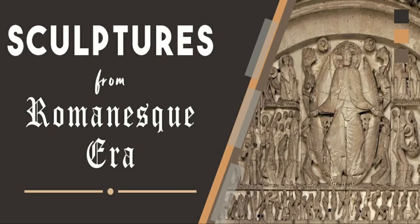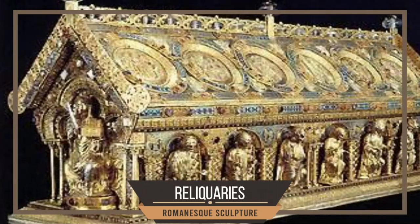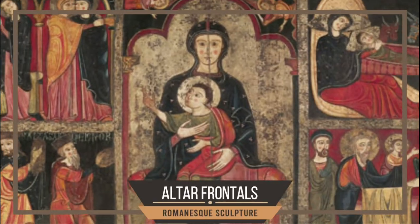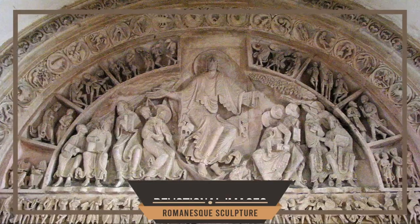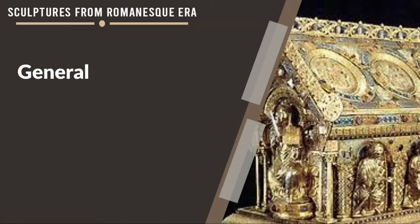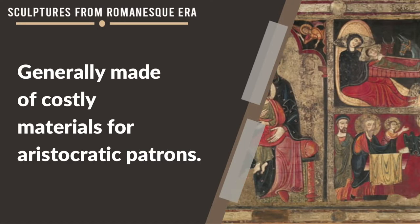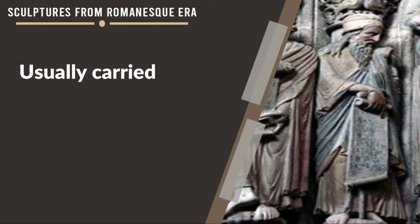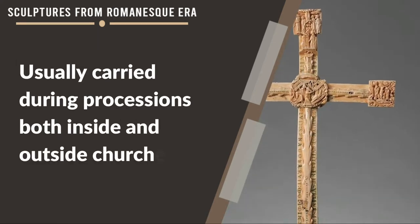Sculpture from the Romanesque era. Romanesque sculptures include reliquaries, altar frontals, crucifixes, and devotional images. These were generally made of costly materials for aristocratic patrons and are usually carried during processions, both inside and outside churches.